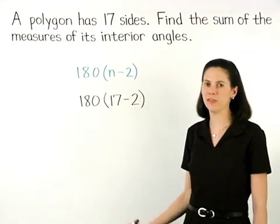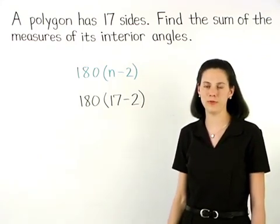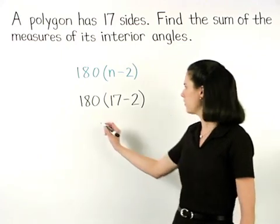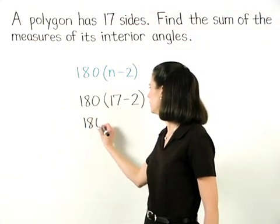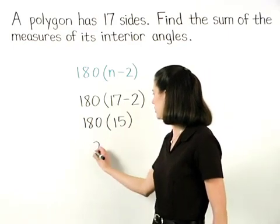Simplifying inside the parentheses first, 17 minus 2 is 15, so we have 180 times 15, which is 2700.